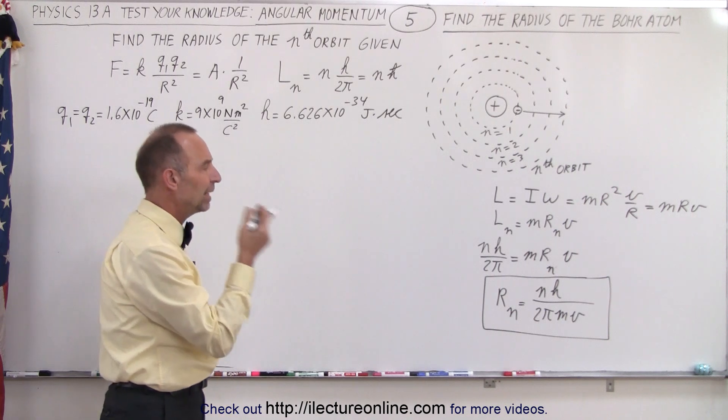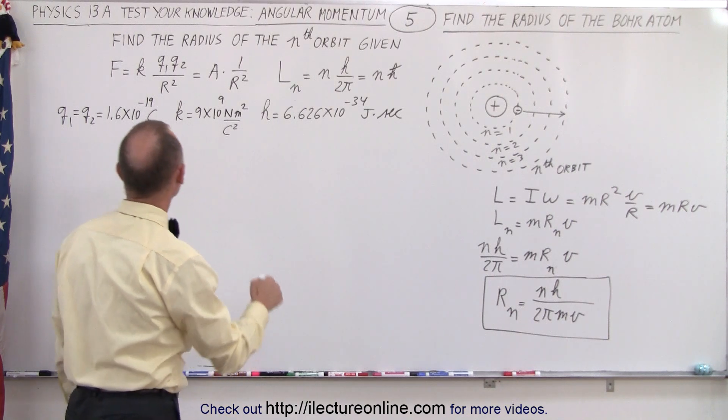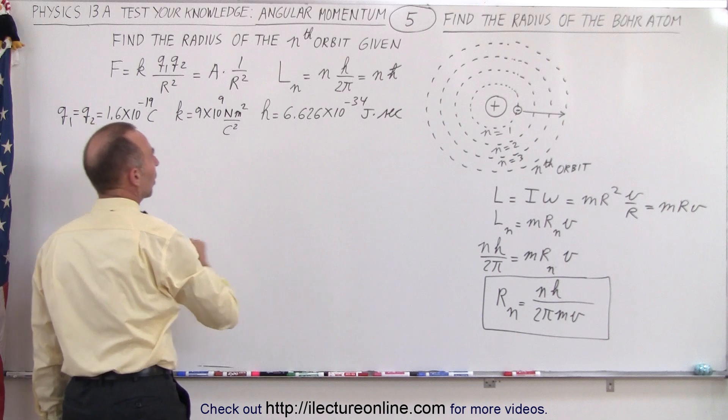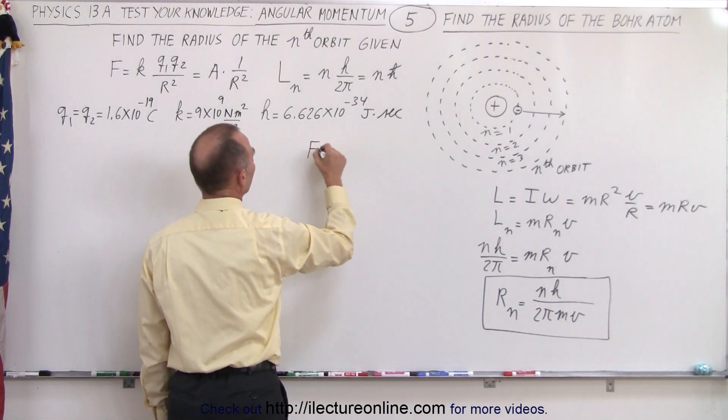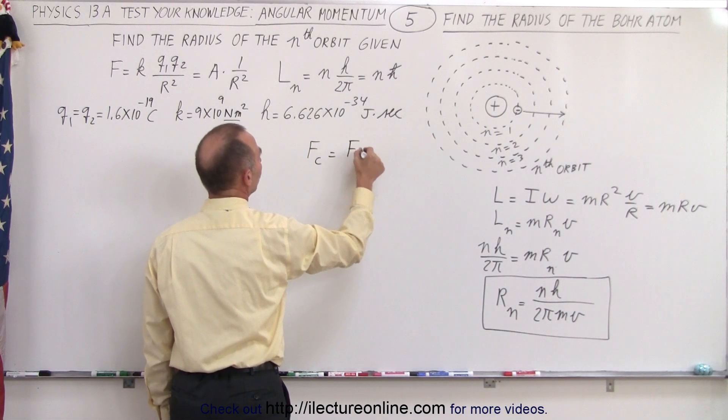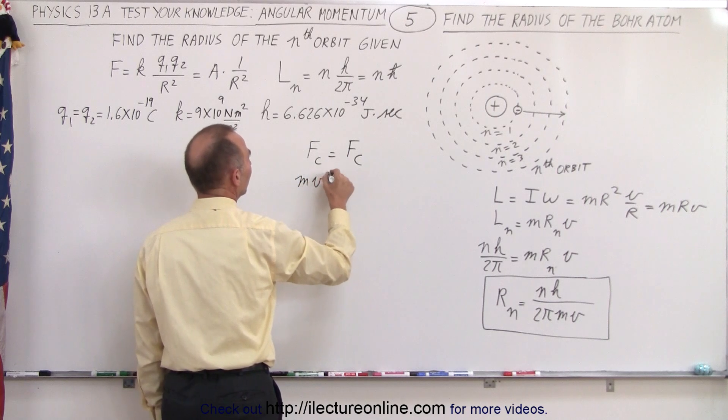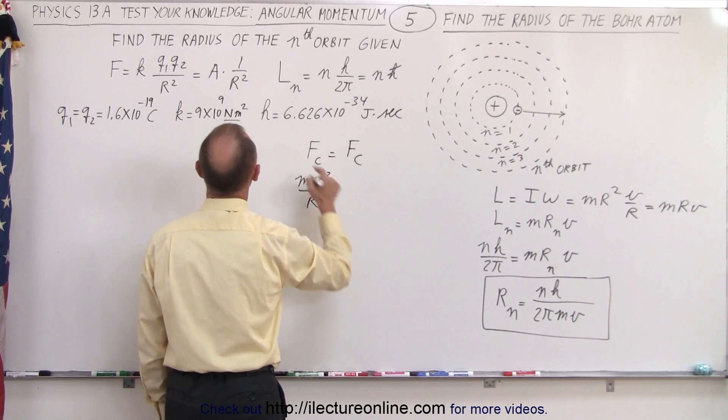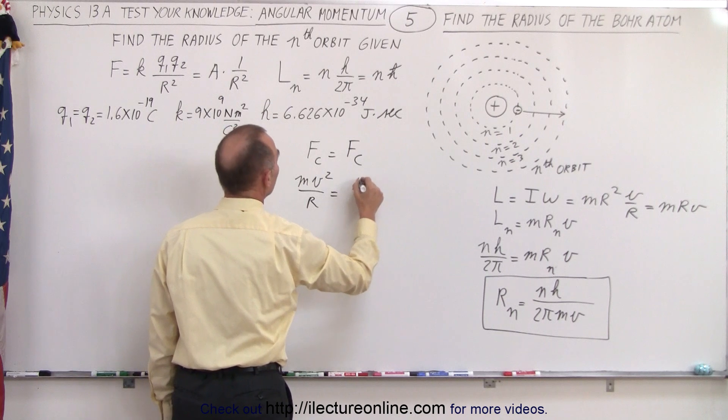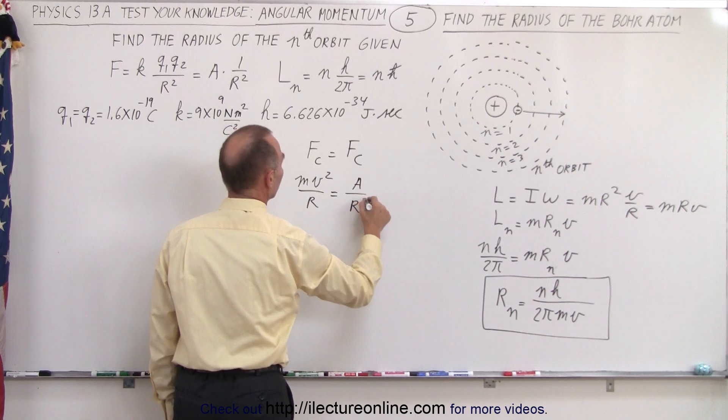But of course, we didn't know what the velocity was. The velocity has to come from realizing Coulomb's law, where we can say that the centripetal force must equal the Coulomb force. The centripetal force would be mv squared over r, and the Coulomb force can be simplified to be a over r squared.